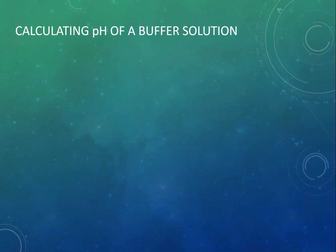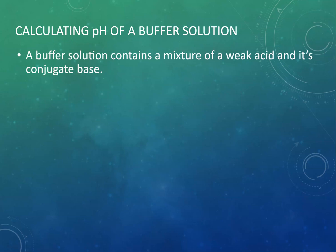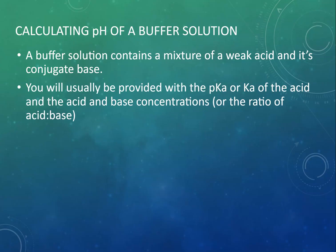So what we're going to look at today is calculating the pH of a buffer solution. A buffer solution is a mixture of a weak acid and its conjugate base. Usually in your question you'll be given some information. You might have the pH or the pKa or the Ka of the acid or the Kb or pKb of the base.